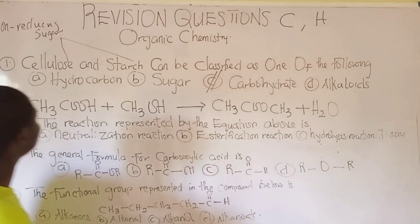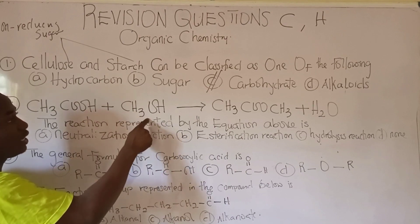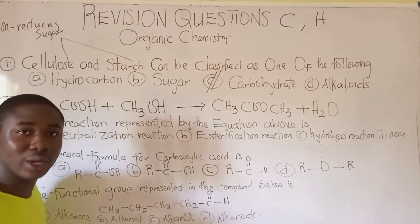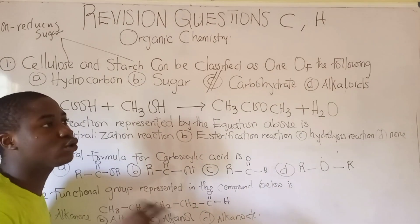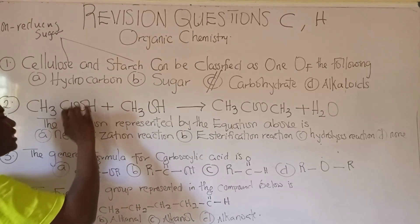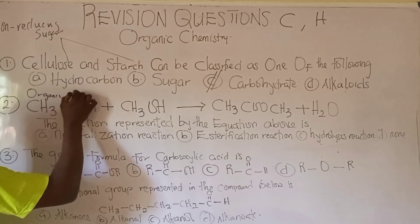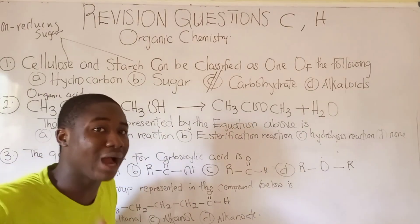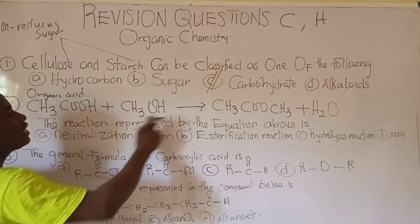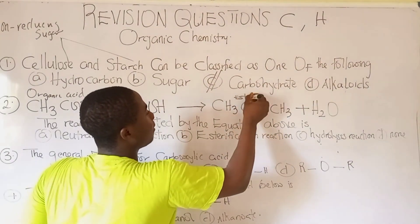Moving to the next question: CH₃COOH reacting with CH₃OH gave us this compound and water. The first question you ask yourself is what group does this compound belong to? This compound is an organic acid called alkanoic acid. This organic acid reacting with an alkanol gives us an ester plus water.